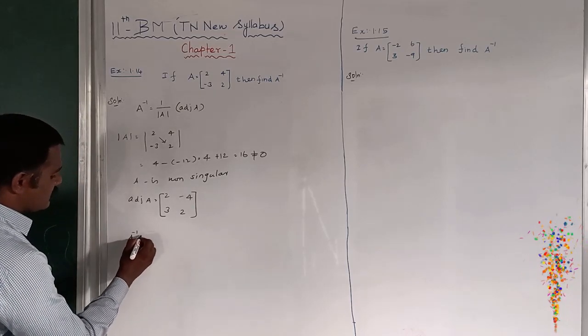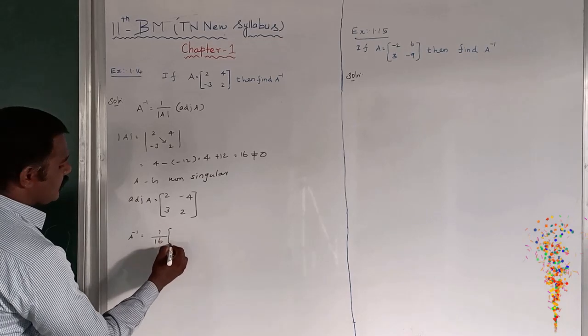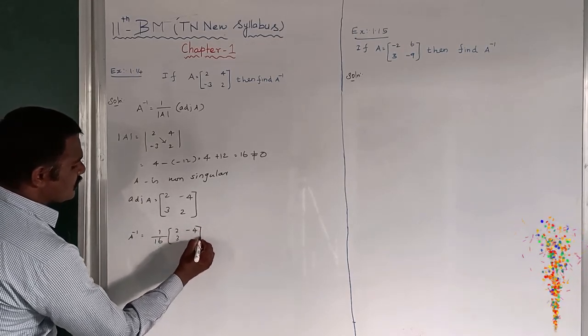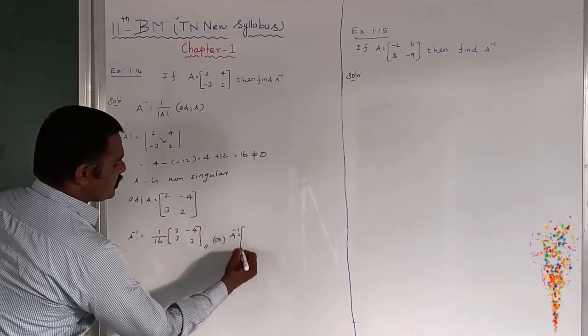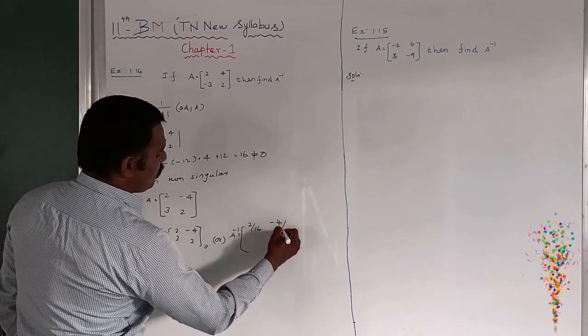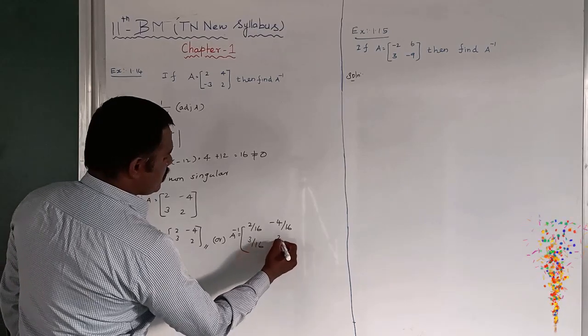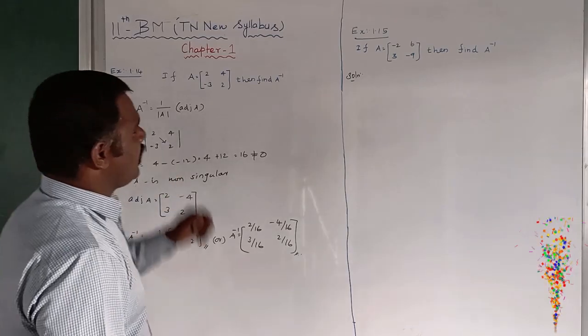So A inverse is equal to 1 by modulus of A into adjoint of A: 1 by 16, 2, minus 4, 3, 2. This is the answer. Or otherwise, you have to divide by 16 from each and every term: 2 by 16, minus 4 by 16, 3 by 16, and 2 by 16. This is A inverse of the matrix A.